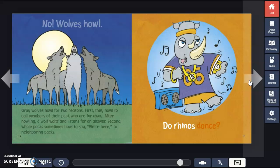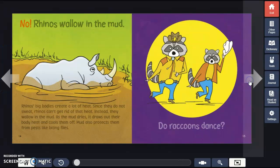Do rhinos dance? No! Rhinos wallow in the mud. Rhinos' big bodies create a lot of heat. Since they do not sweat, rhinos can't get rid of that heat. Instead, they wallow in the mud. As the mud dries, it draws out their body heat and cools them off. Mud also protects them from pests like biting flies.